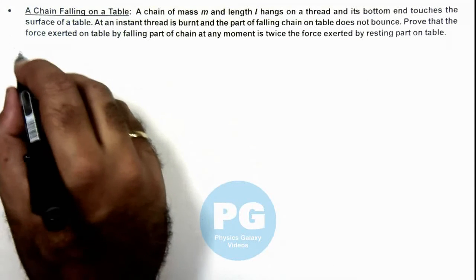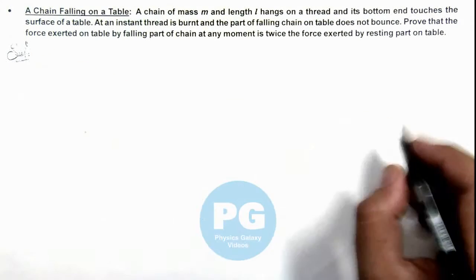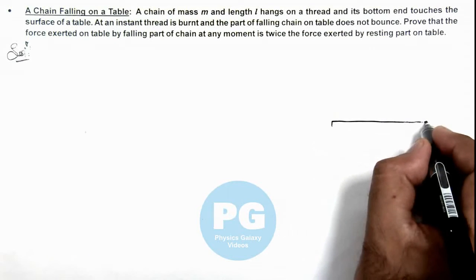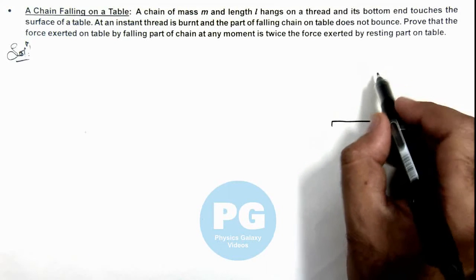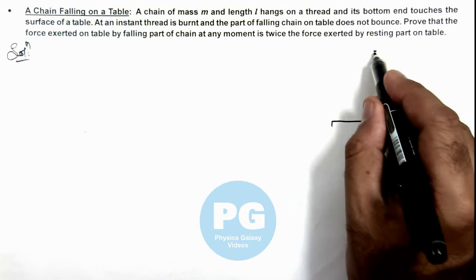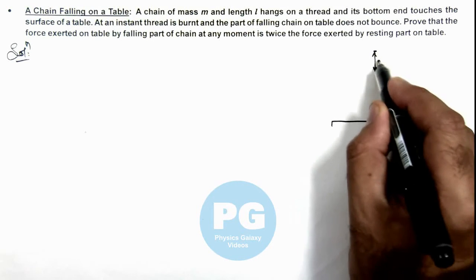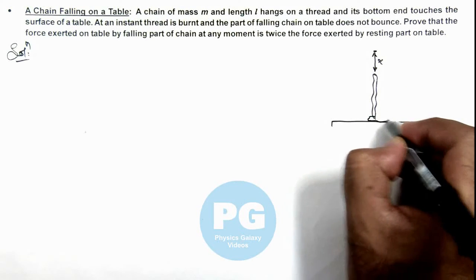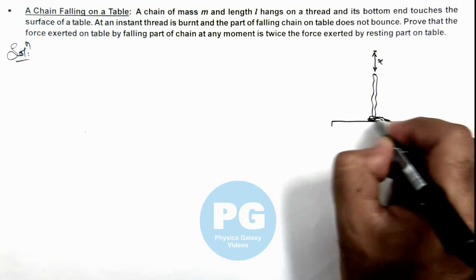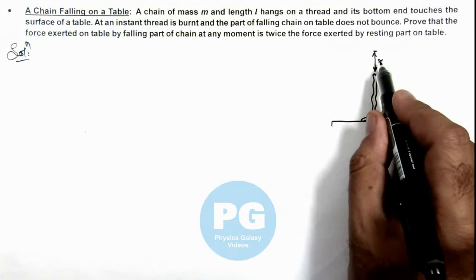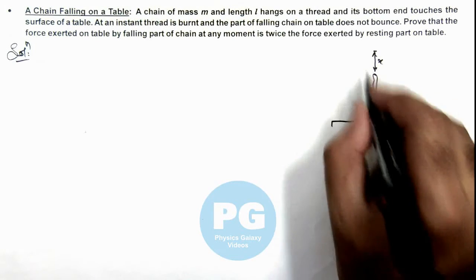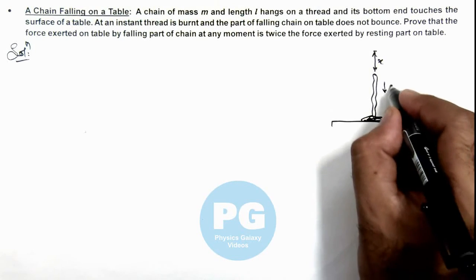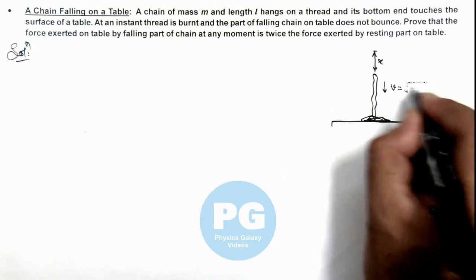So here in this situation, the chain which is falling on the table has fallen by a distance x from its initial height, and the length of chain which is resting on table is of height x. Then as the chain is in free fall we can say its velocity is root 2gx.